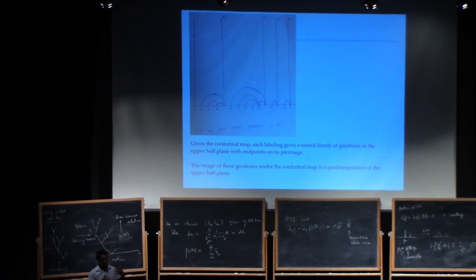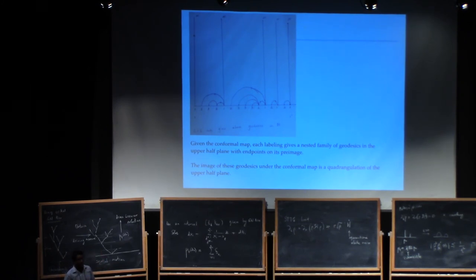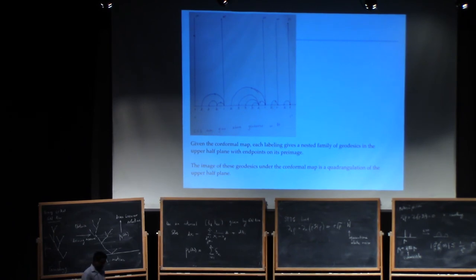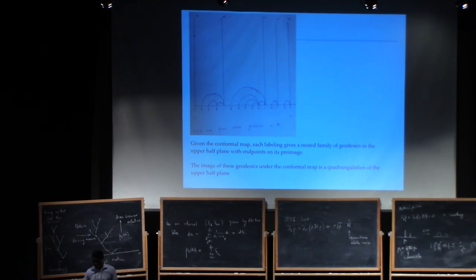In some sense the work we're doing is closely tied to building quadrangulations. It doesn't fully work because our mappings have the right combinatorics but are not isometric — we don't have isometric embeddings of trees by this method — but I'm quite optimistic we should be able to do something interesting. Thank you.